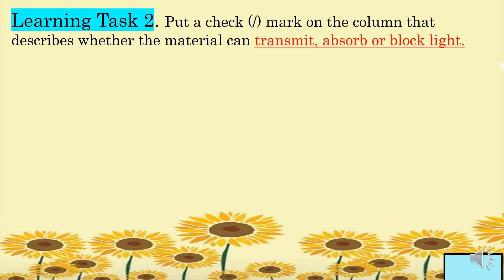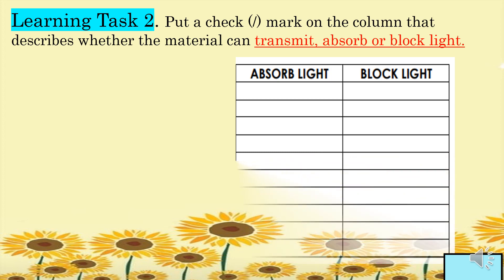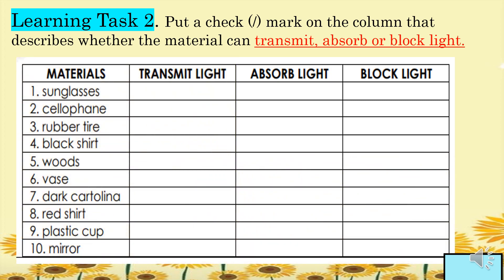For learning task two, put a check mark on the column that describes whether the materials can transmit, absorb, or block light. The materials are: one, sunglasses; two, cellophane; three, rubber tire; four, black shirt; five, woods; six, vase; seven, dark cartolina; eight, red shirt; nine, plastic cup; and ten, mirror.